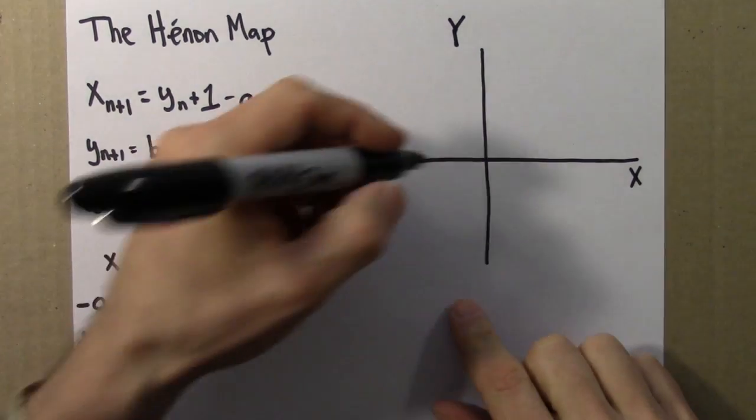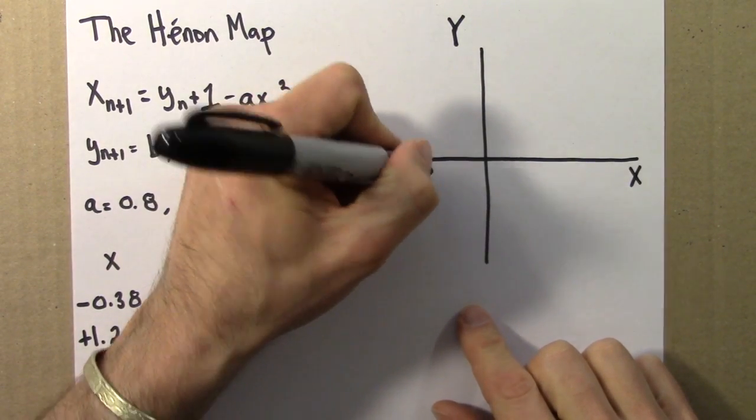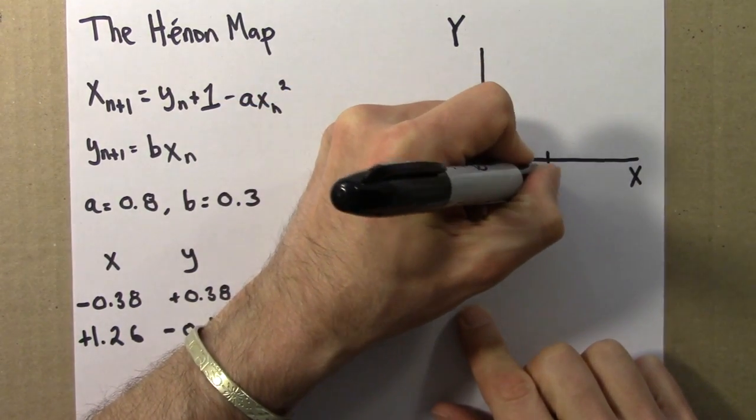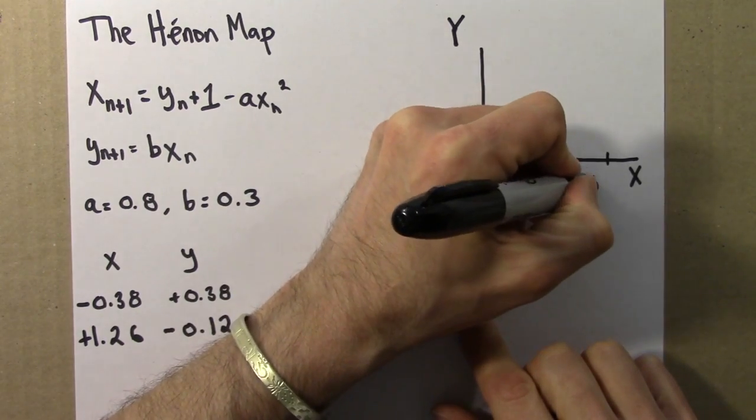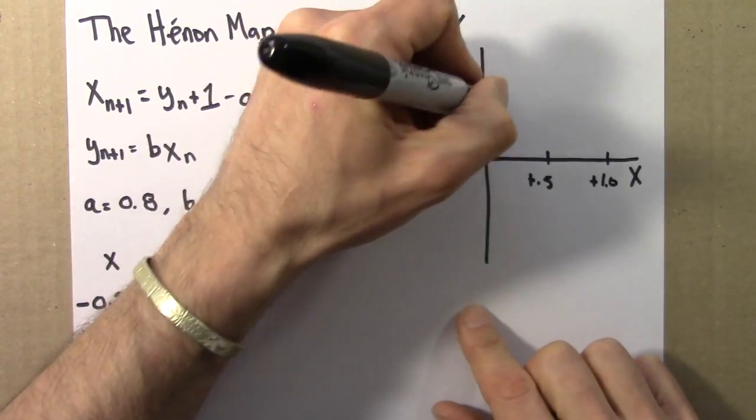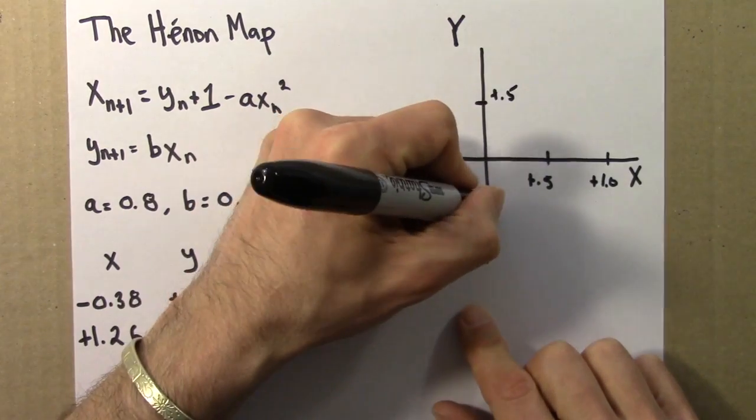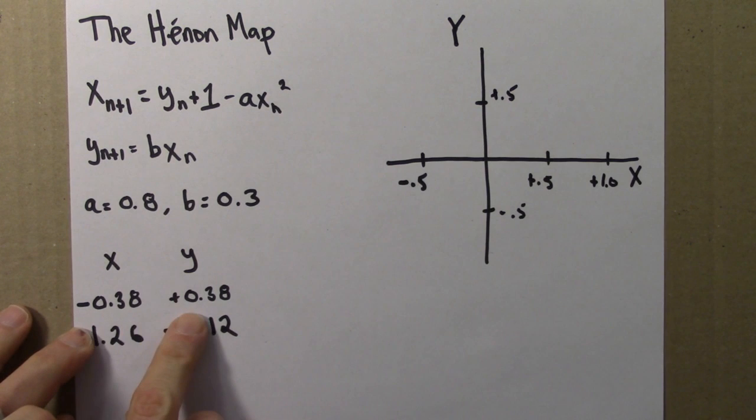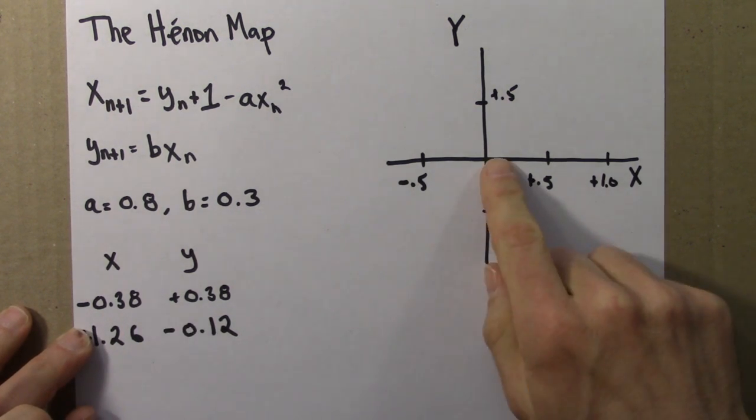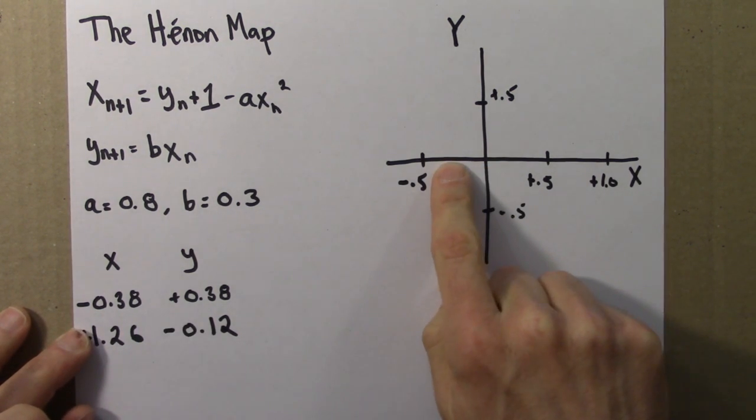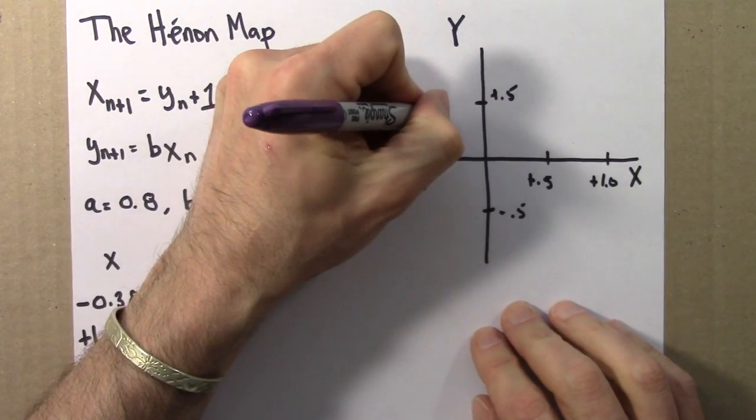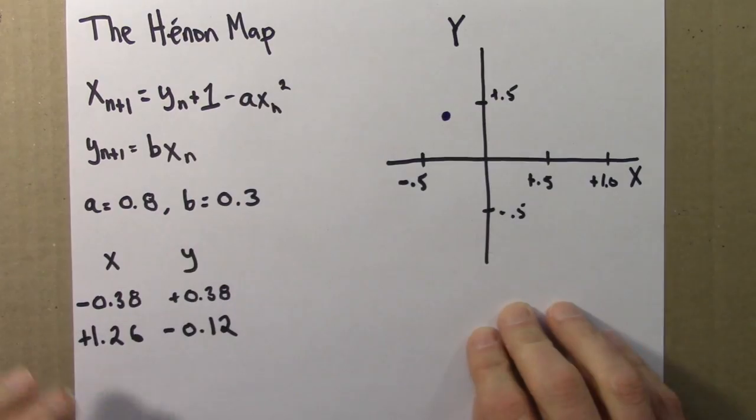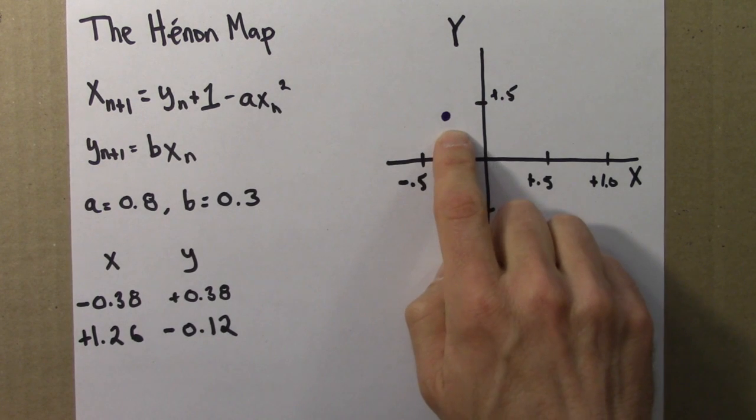So I'll do a really rough sketch of this. This will be minus 0.5, plus 0.5, plus 1, plus 0.5, minus 0.5. So let's see. We've got two points. The first point is x is minus 0.38, y is plus 0.38. So I'd go to the left about 0.4, up about 0.4, and that would be the point on the xy plane.